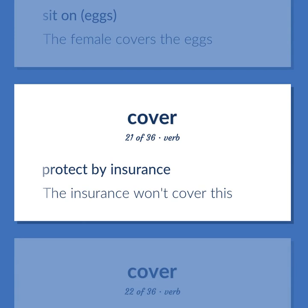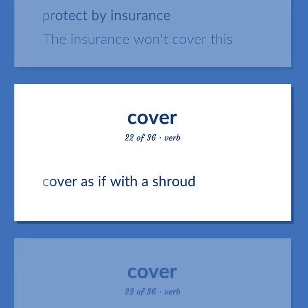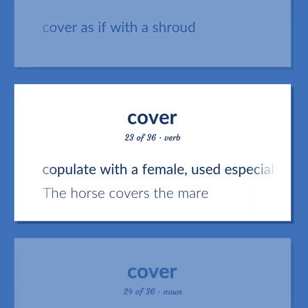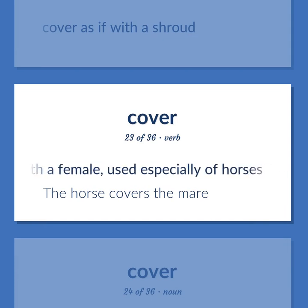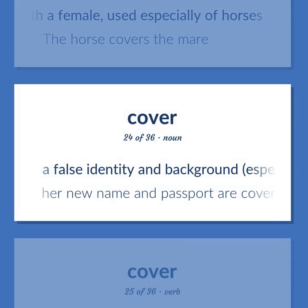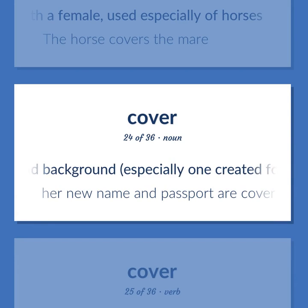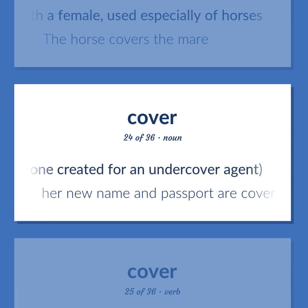Protect by insurance. The insurance won't cover this. Cover as if with a shroud. Copulate with a female, used especially of horses. The horse covers the mare. A false identity and background, especially one created for an undercover agent. Her new name and passport are cover for her next assignment.